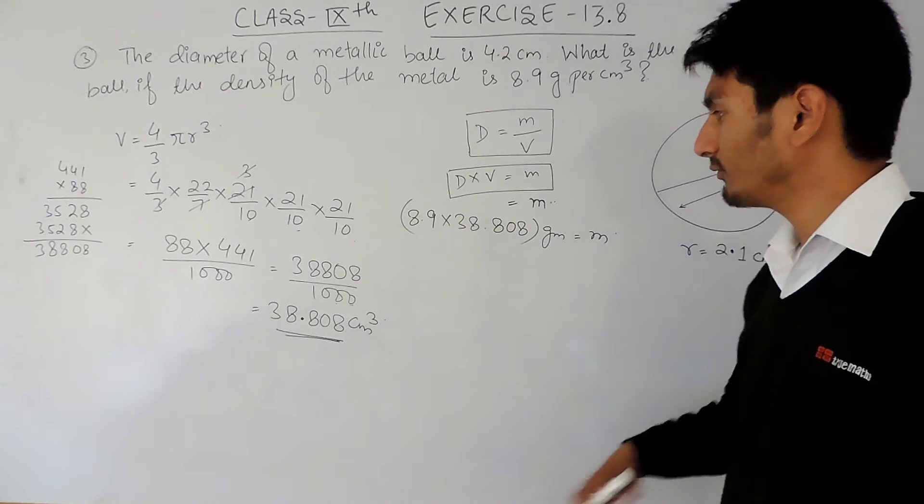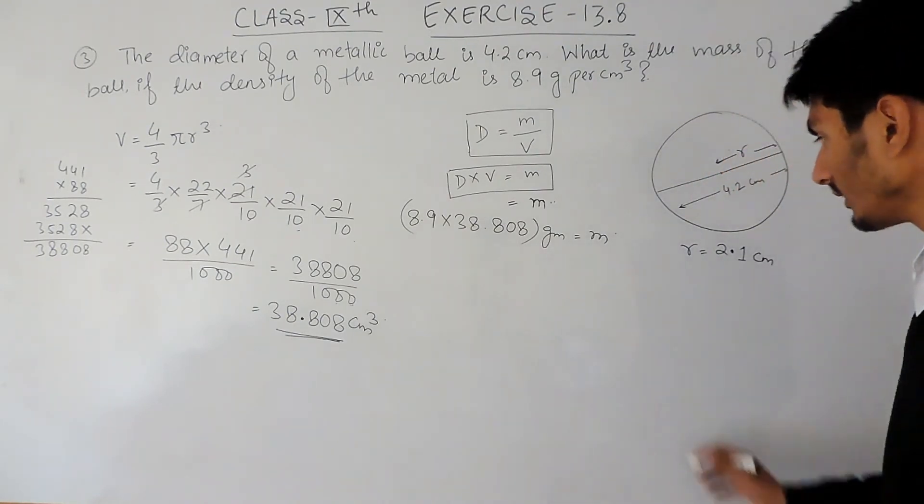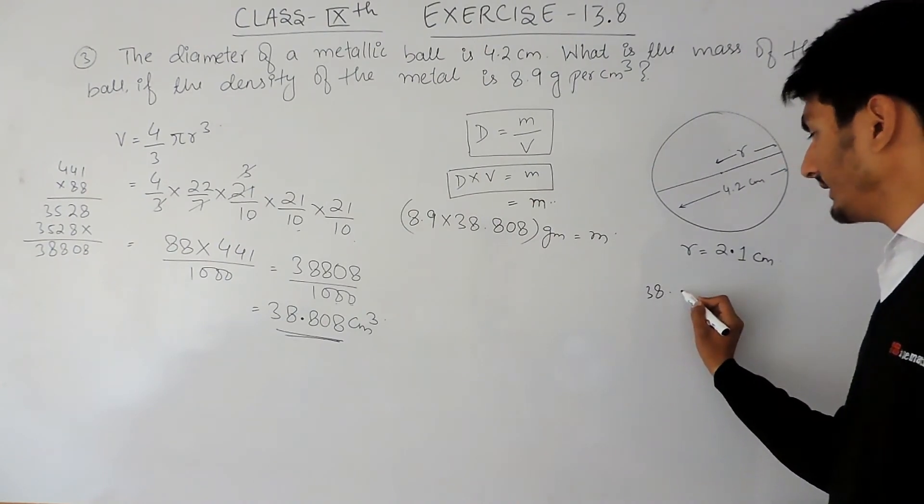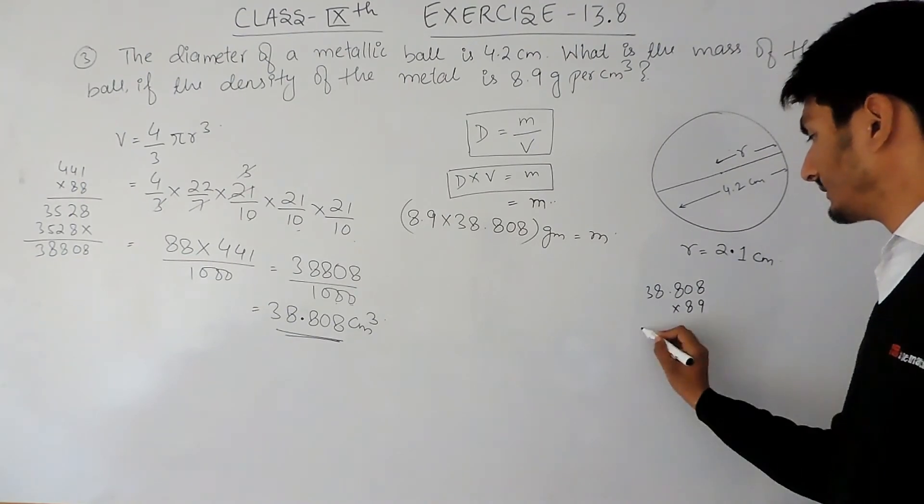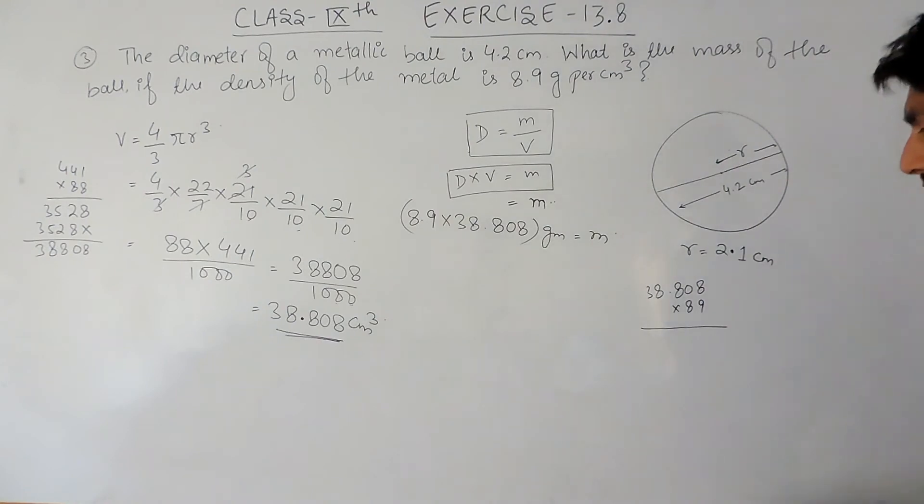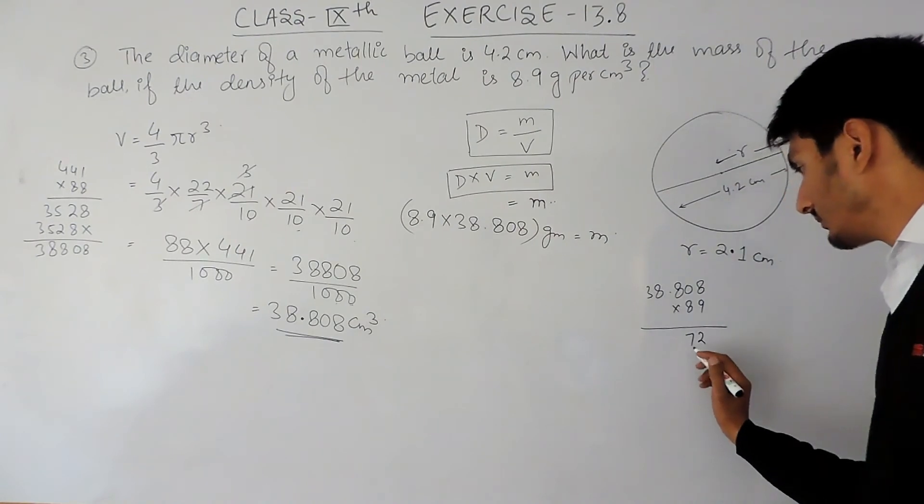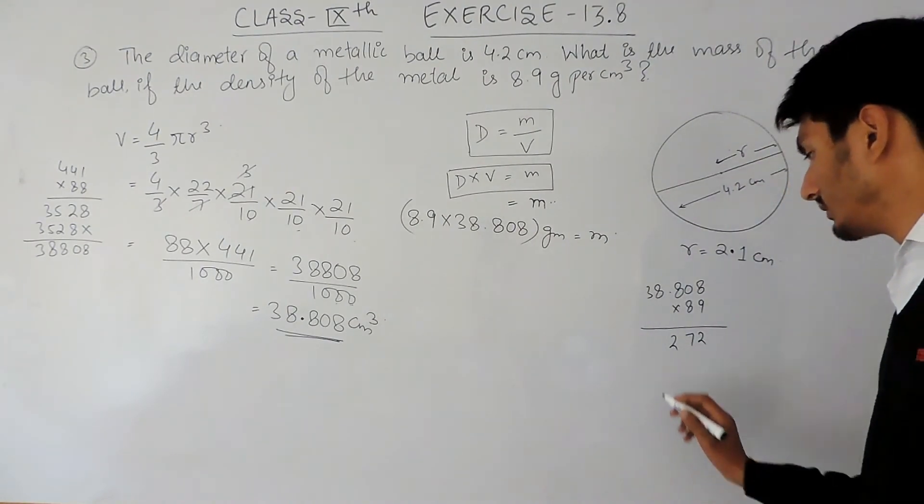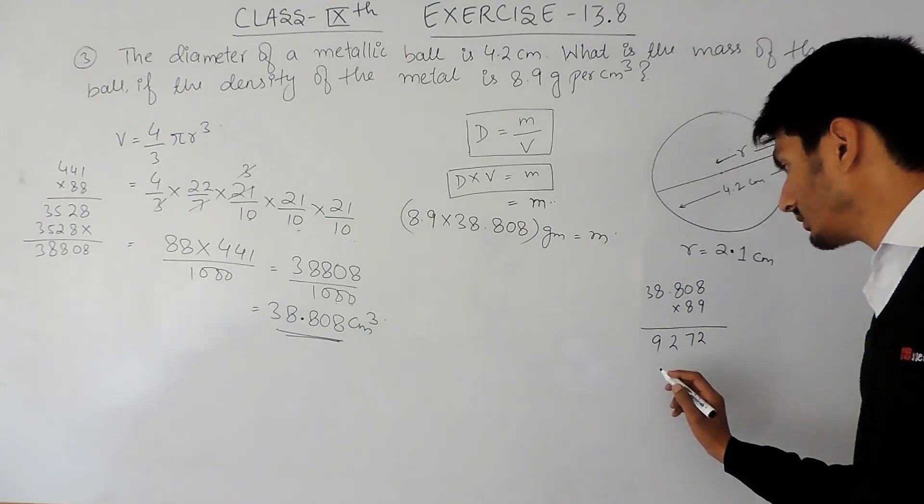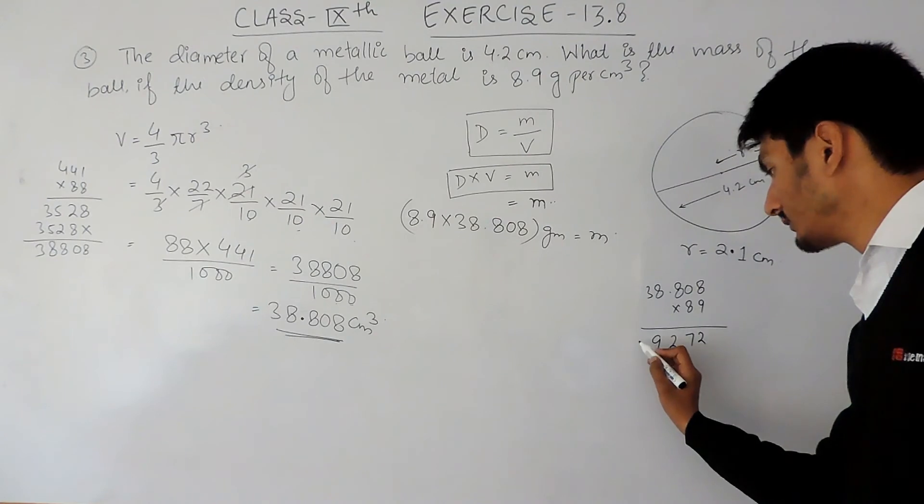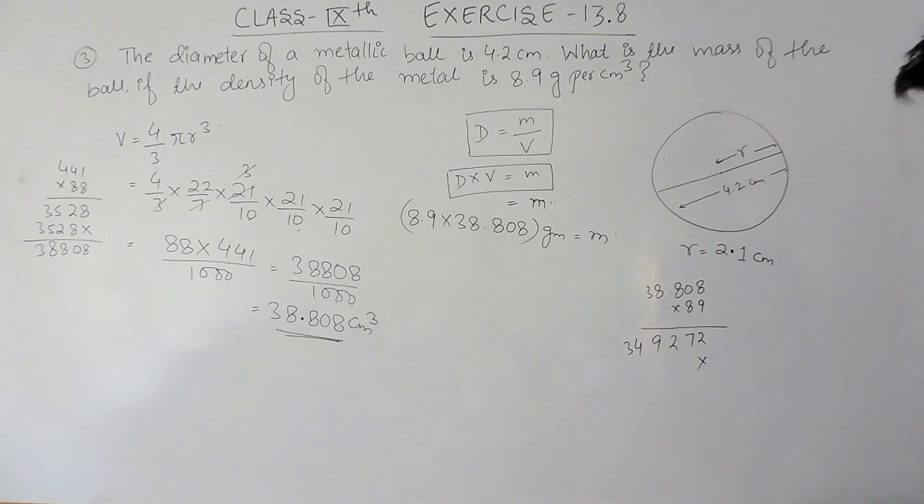Now this is in grams, and if you want to convert this into kgs, you have to divide this by thousand. Now let's multiply it. It is 38.808 multiplied by 89. Ignoring the decimal right now, so it should be 72. Now multiply this by 8.